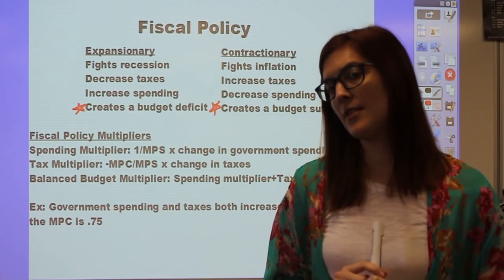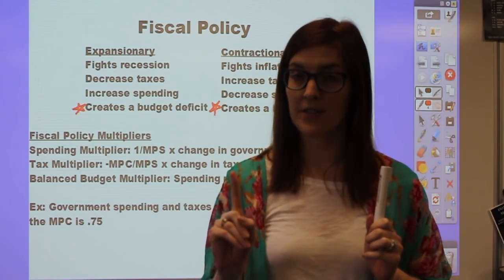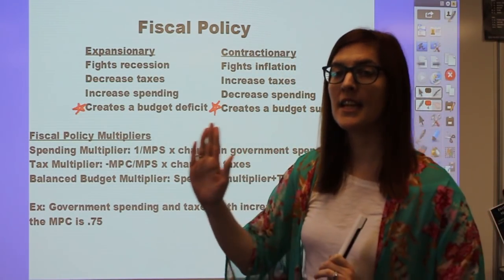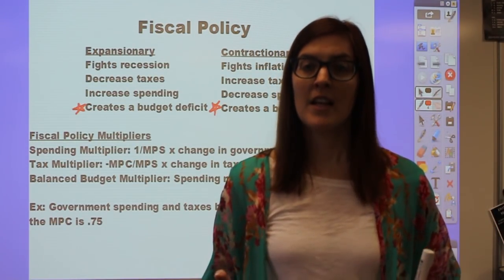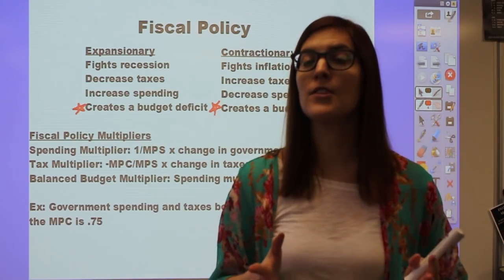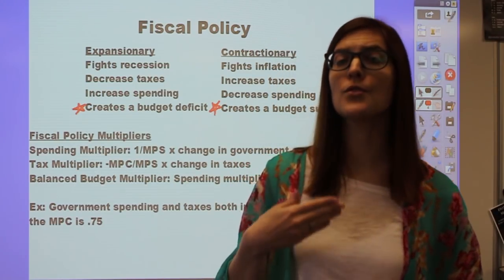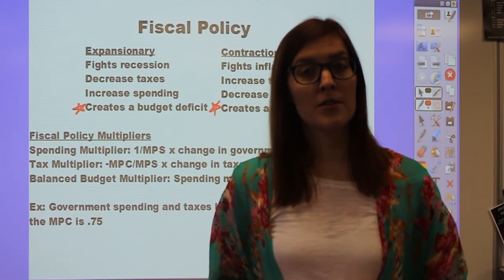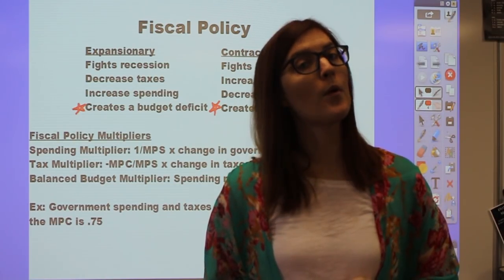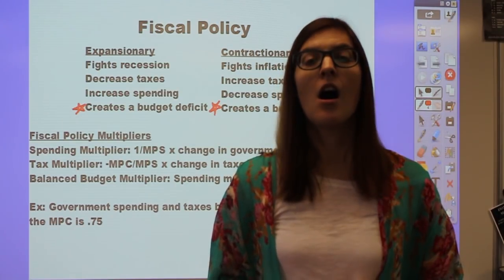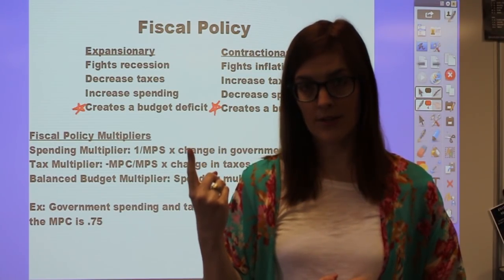There are two types of fiscal policy: automatic stabilizers and discretionary fiscal policy. Automatic stabilizers are continuously operating in our economy without the government passing a single new law. They've been set up since the New Deal to kick in during a recession or inflation automatically. For example, in a recession, unemployment goes up, more people qualify for unemployment compensation, and automatically government spending increases—no new law required.